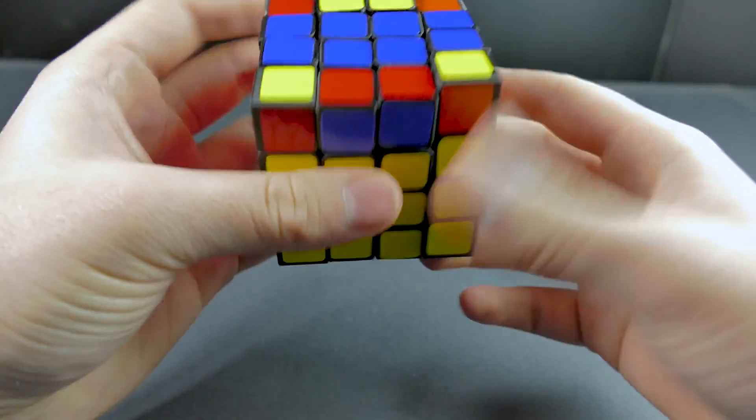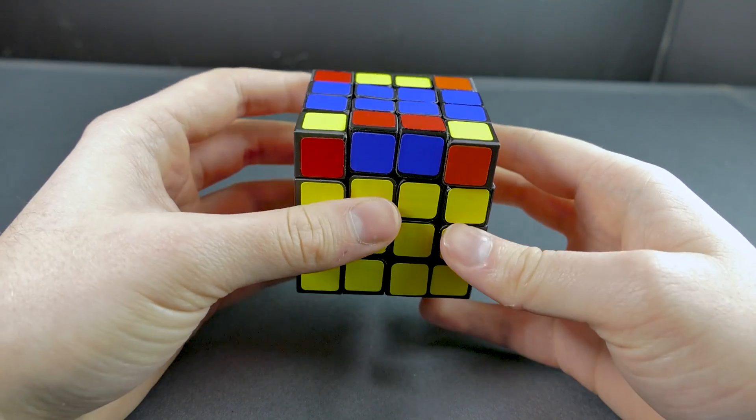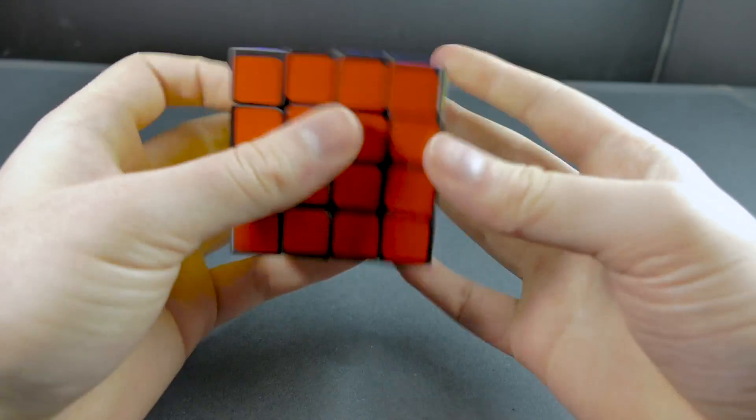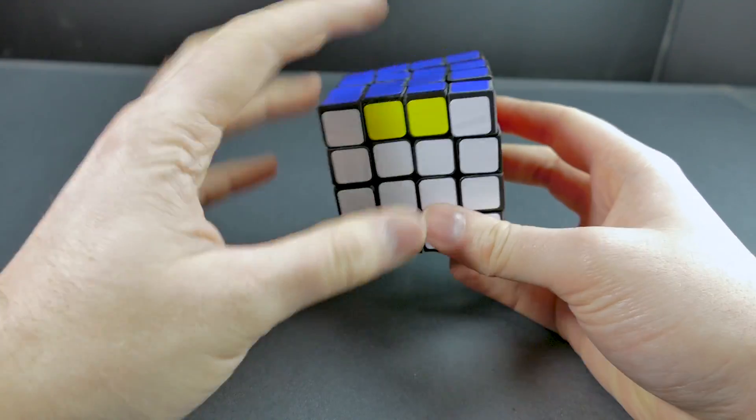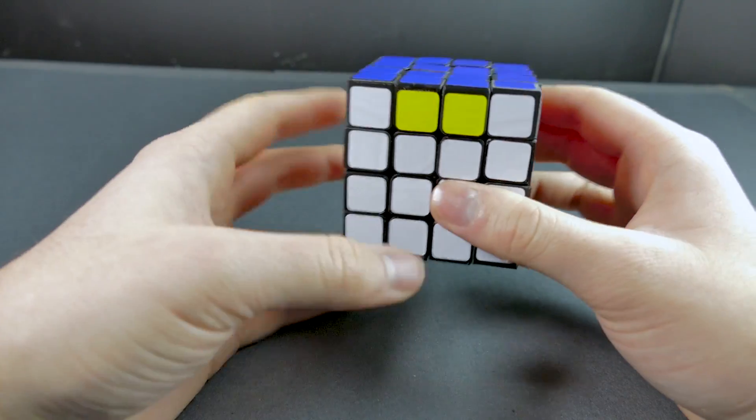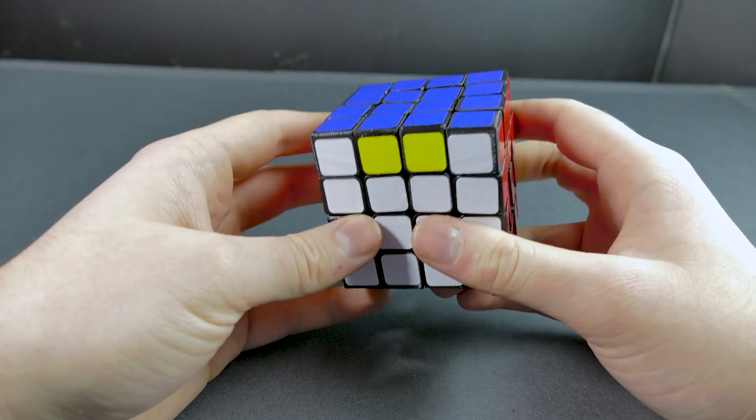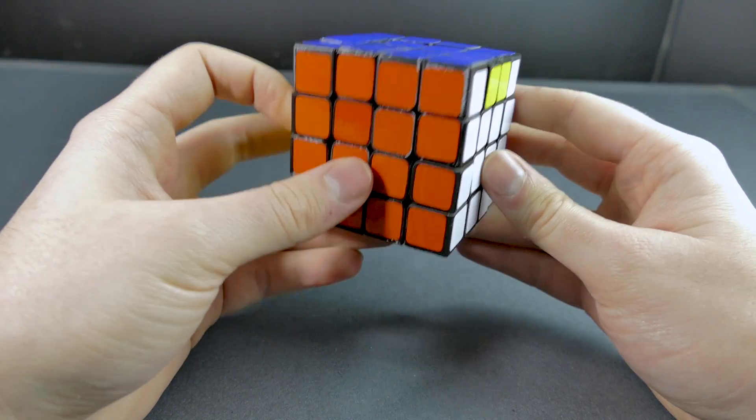Now, this puzzle, interestingly enough, will never get OLL parity. Now, this puzzle can still have PLL parity, which is quite a pain to solve on this puzzle, by the way. But there is actually a second kind of last layer parity that does not come up on a normal 4x4, but can on this one.